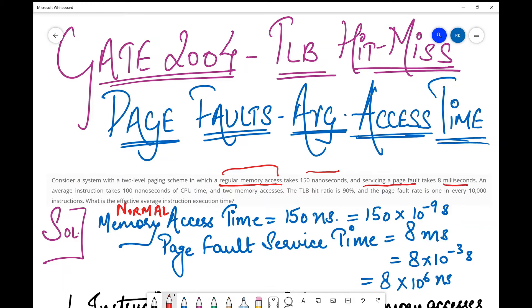Why do I highlight 'regular memory access'? Generally, you don't find the same term in such questions. They would say the cache access memory time or TLB access time with hit-miss or service time. But here they say a regular memory access takes so and so time.